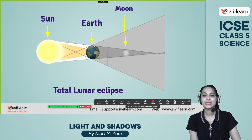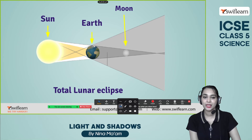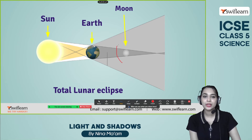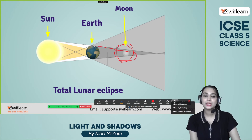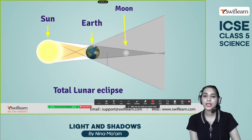This is the total lunar eclipse — the earth's shadow fully covers the moon. Look, it fully covers the moon, which is why it is known as the total lunar eclipse, and there is no sunlight.